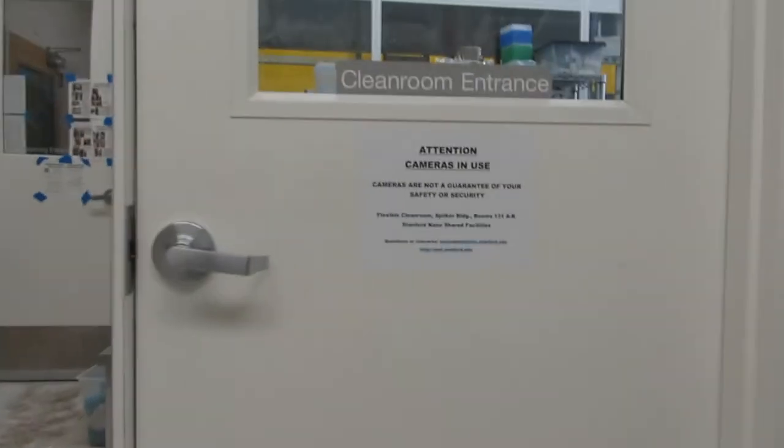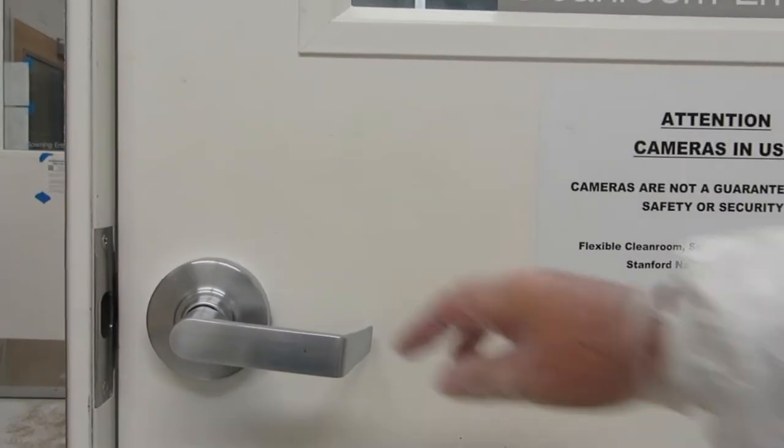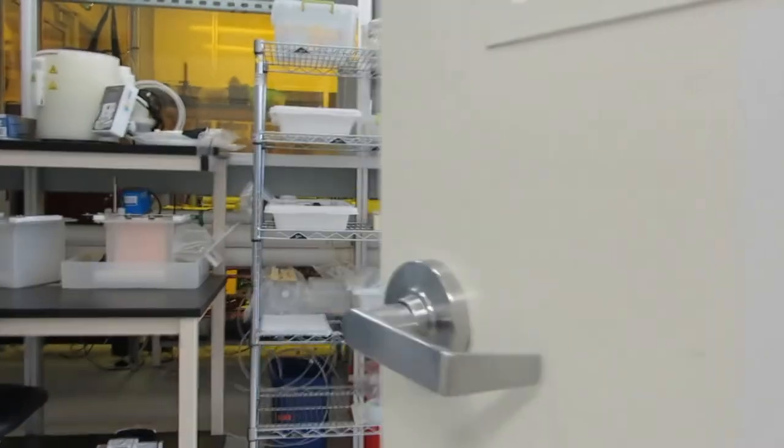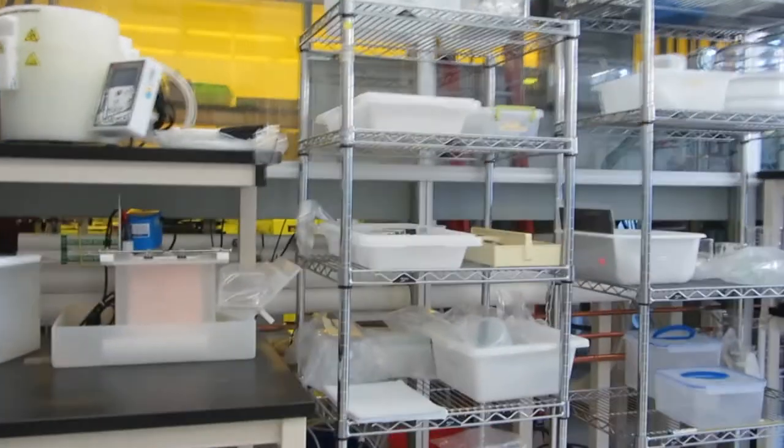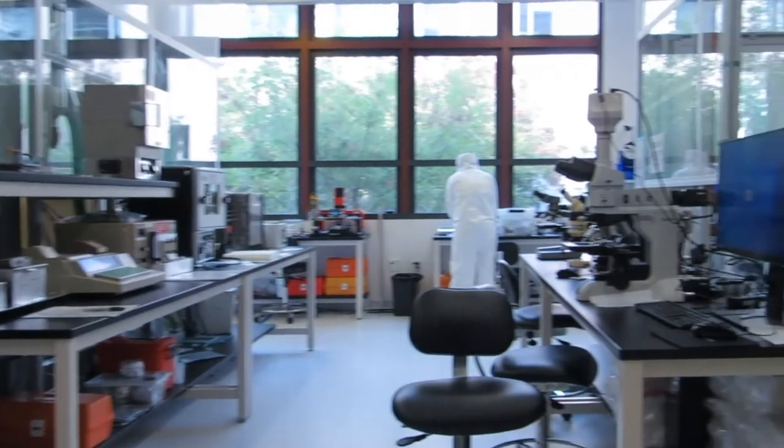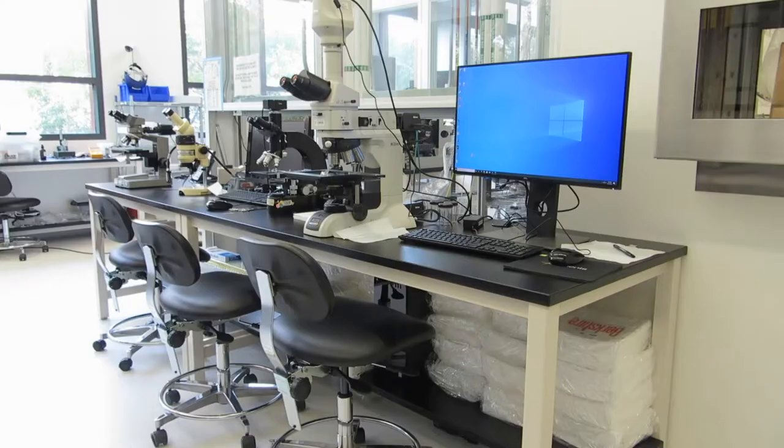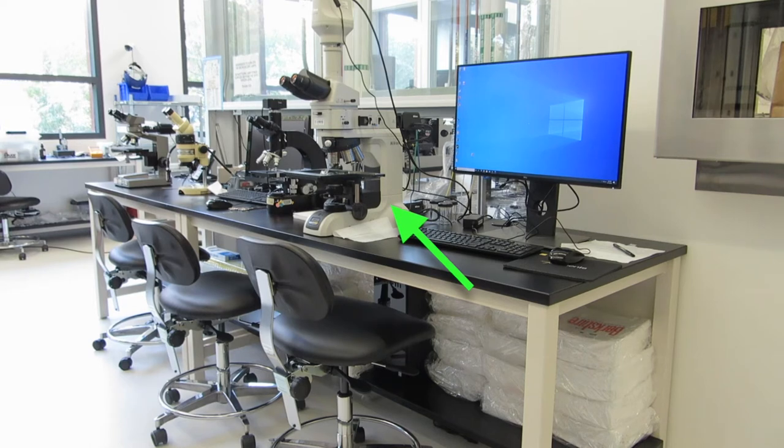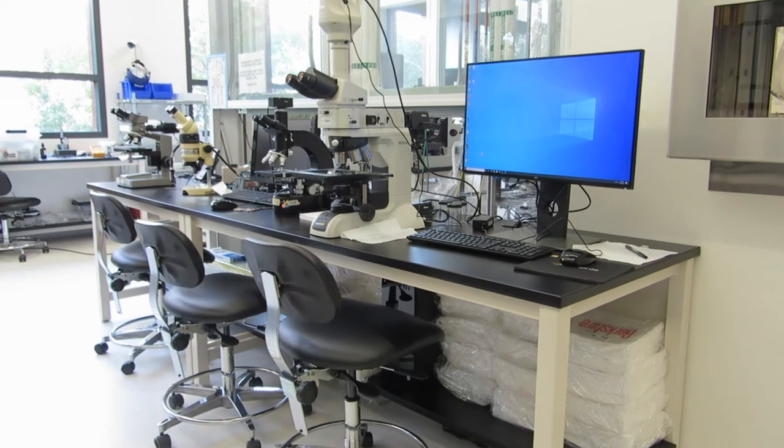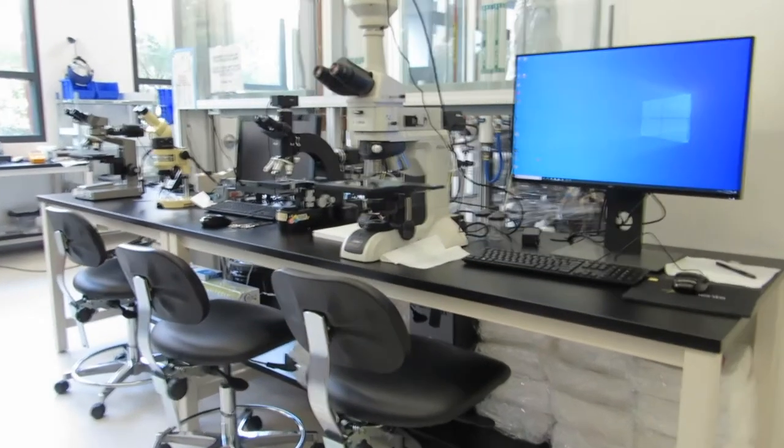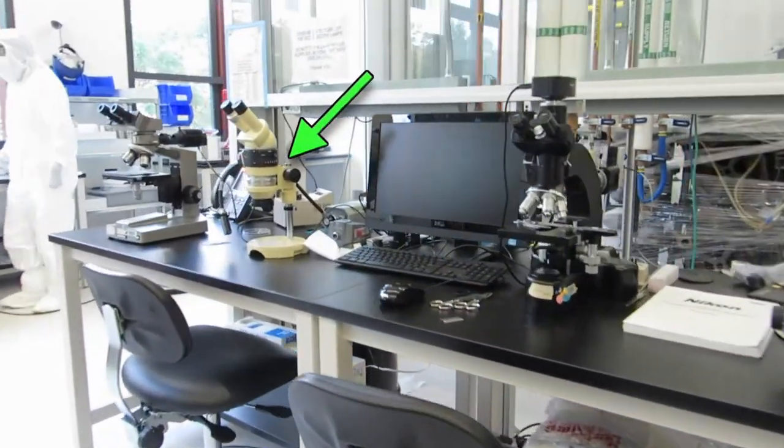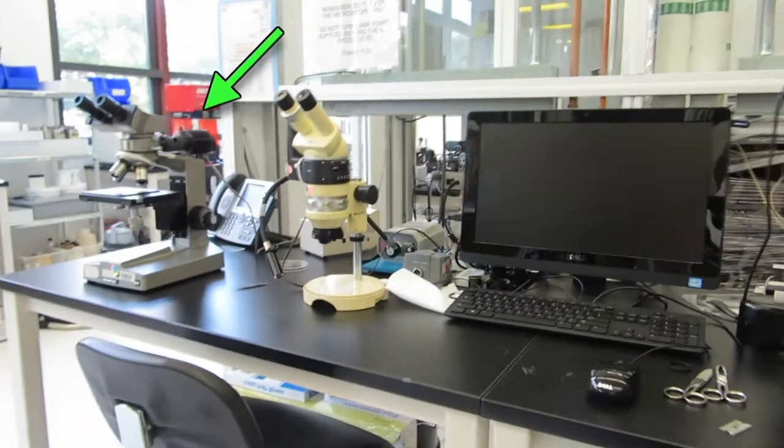After getting properly gowned up in the gowning room, you are now ready to enter the cleanroom. Make sure you are wearing your safety glasses. On the right is a long row of microscopes. The first one on the right end is a brand new very nice Nikon with sophisticated image processing features. Then there's an old high-powered lights microscope, a Wild low-powered stereo microscope, and an Olympus high-powered inspection microscope.